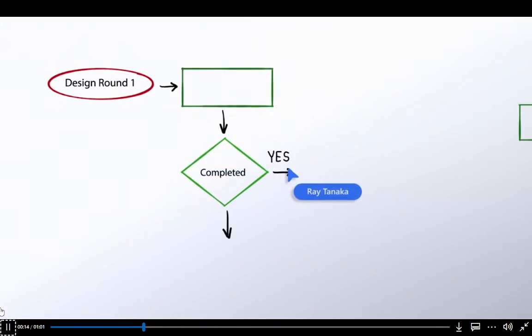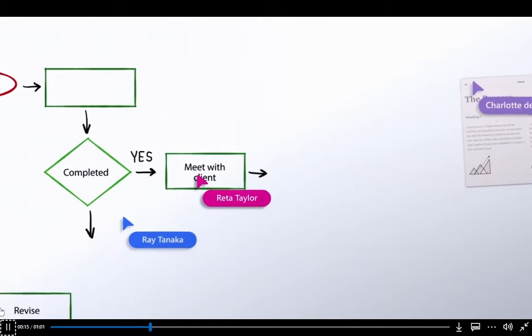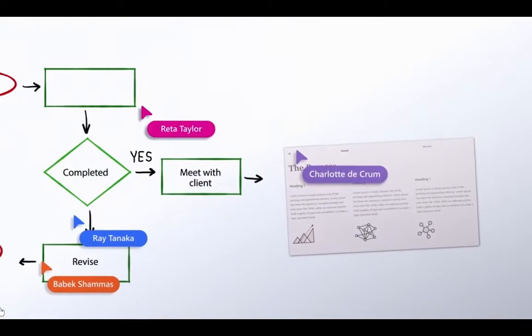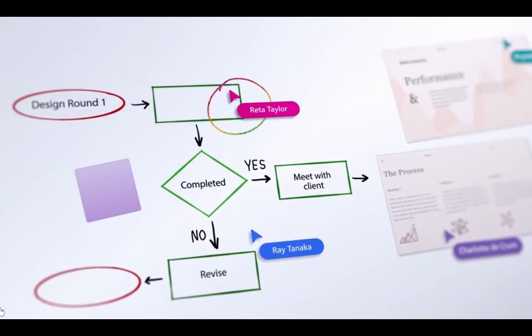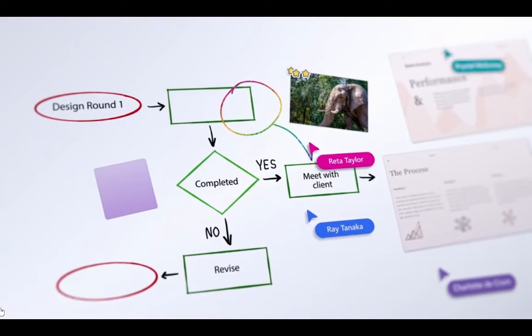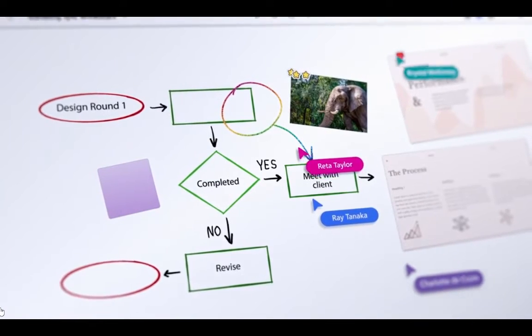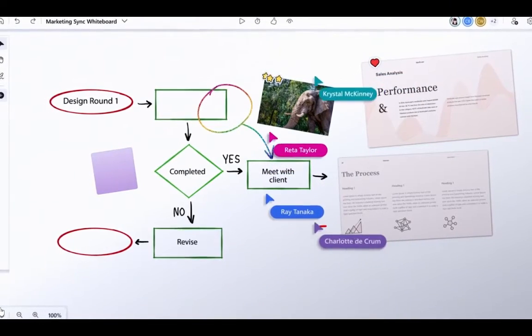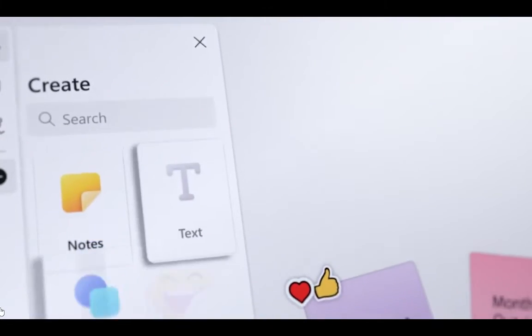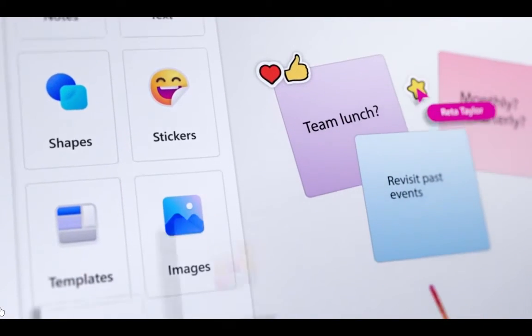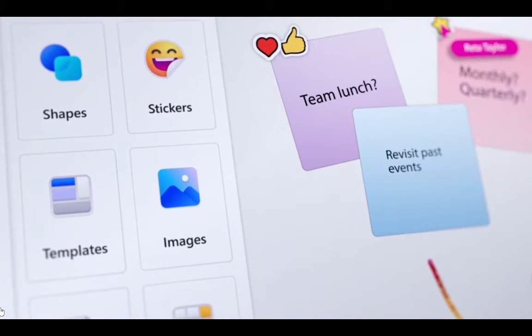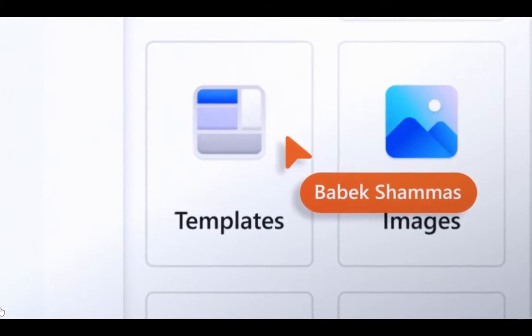Animated sticky notes appear, each listing an agenda item. The cursors seem to draw colorful shapes, while each participant name follows its matching cursor. The shapes form a flowchart. Participants drag and drop articles and images onto the whiteboard space.